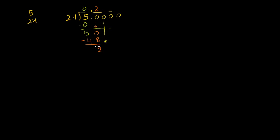We're going to keep bringing down 0's until we have no remainder. So bring down another 0. 24 goes into 20 0 times. 0 times 24 is 0. 20 minus 0 is 20. Let's bring down another 0.